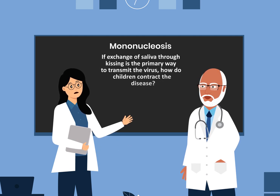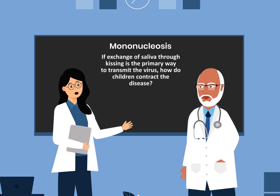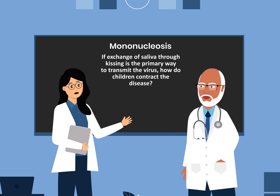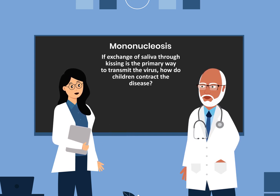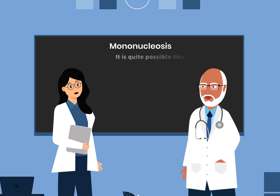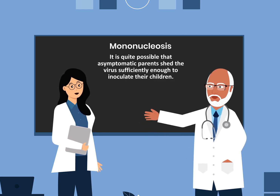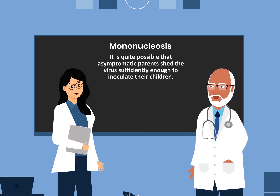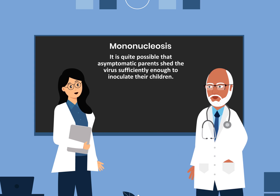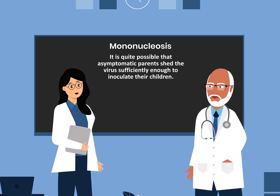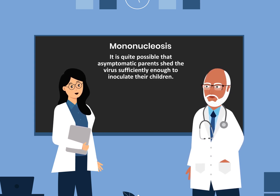If exchange of saliva through kissing is the primary way to transmit the virus, how do children contract the disease? It is quite possible that asymptomatic parents shed the virus sufficiently enough to inoculate their children.